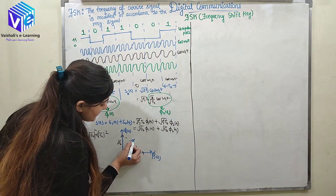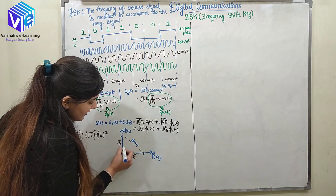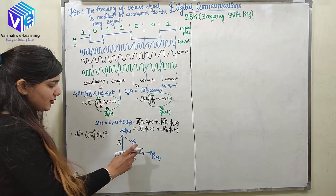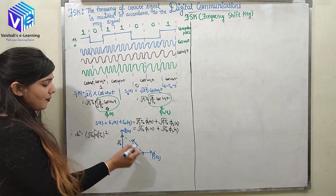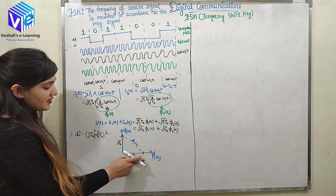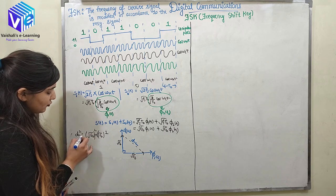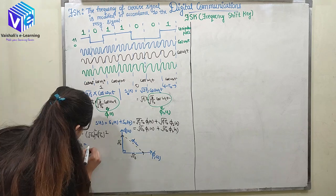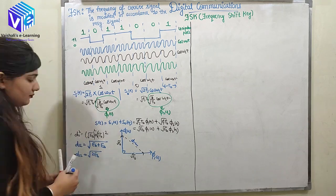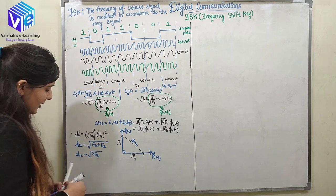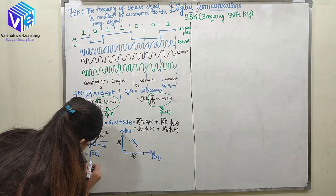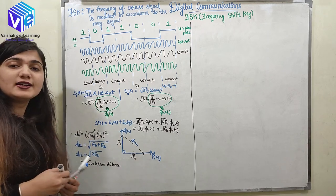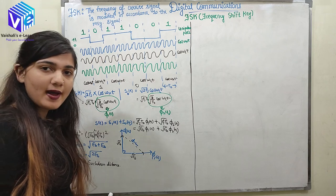To find the distance D₁₂, I use the right-angle triangle and apply the Pythagorean theorem: the hypotenuse squared equals the sum of the squares of the sides. So D₁₂² = (√E_B)² + (√E_B)² = 2E_B, giving D₁₂ = √(2E_B). The Euclidean distance is √(2E_B), which is used to find the probability of error.